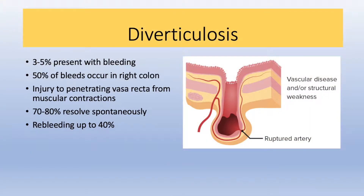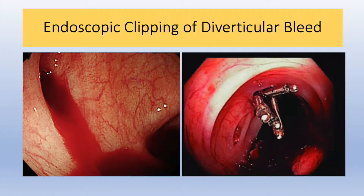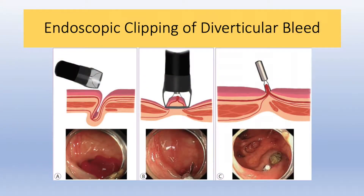Diverticular bleeding is the most common source of massive lower GI bleeding. While diverticula are ubiquitous in older adults, only 3-5% will present with bleeding. The majority of these bleeds occur on the right side, and the etiology is thought to be injury to the penetrating vasa recta from chronic muscular contractions. The majority resolve spontaneously, but re-bleeding is quite common. Endoscopic clipping or angiography are the first-line strategies. Here is a depiction of how an endoscopic clip is applied — grasping the mucosa at the site of hemorrhage and deploying a metallic clip.